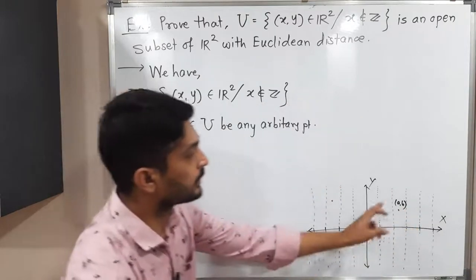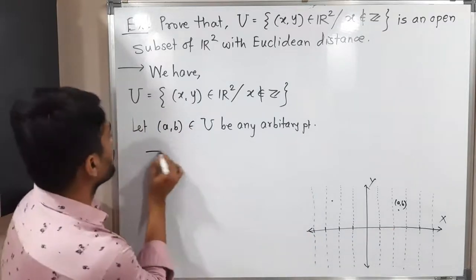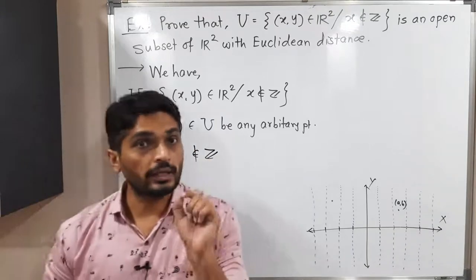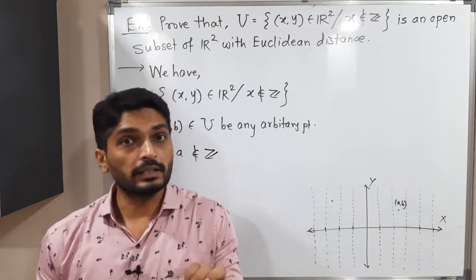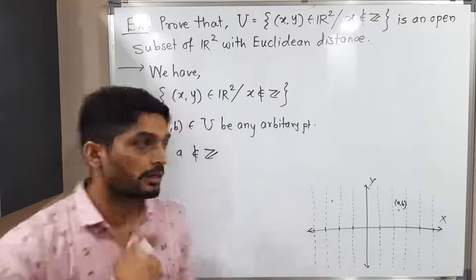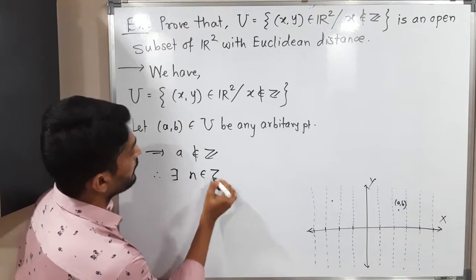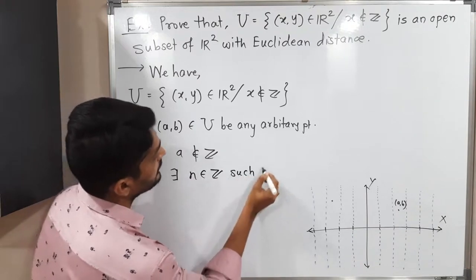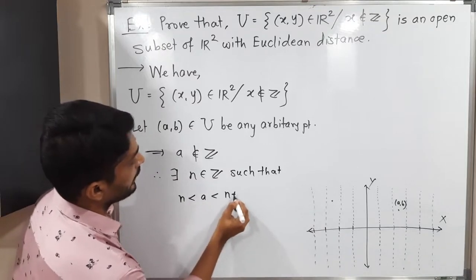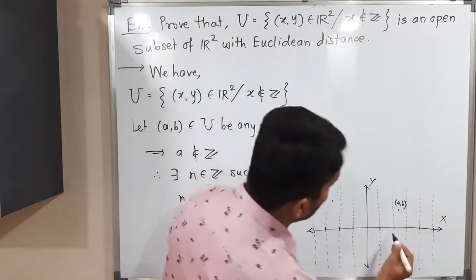Suppose this is the point (a, b). That point should not be on any of the vertical lines, otherwise its x-component would be an integer. So since it is an element of U, a is not an integer. But definitely there will be some integers n and n+1 such that a lies between them. Therefore, there exists some integer n such that n < a < n+1.